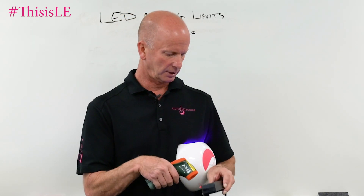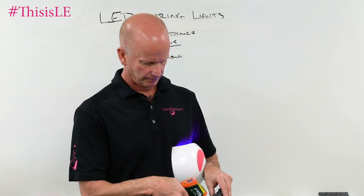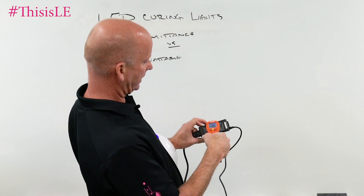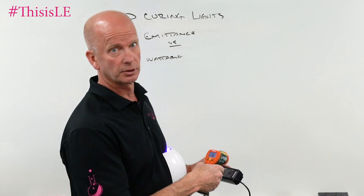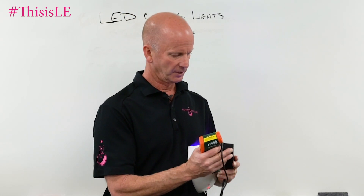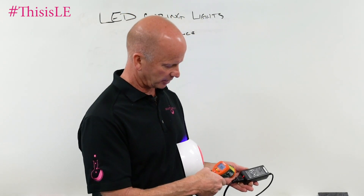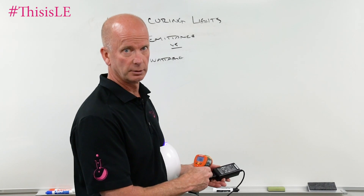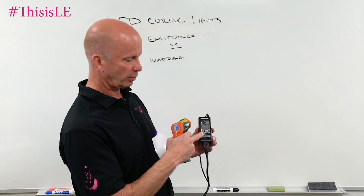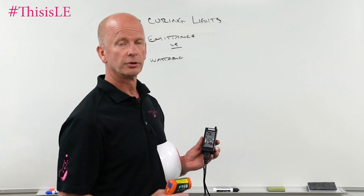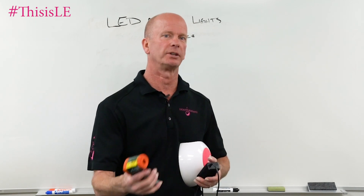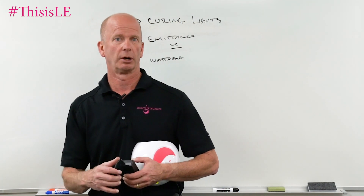We can also check the power loss in the AC-DC adapter. Here at the AC-DC adapter, we're at 80 degrees — so we're losing some power there. Then at the bottom, where the power cord plugs into the AC-DC adapter, we're at 79 degrees. All of those losses reflect how much energy actually gets transferred to producing the light that we use when we cure our gel products.